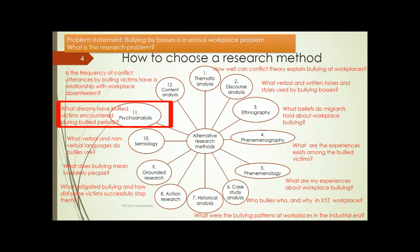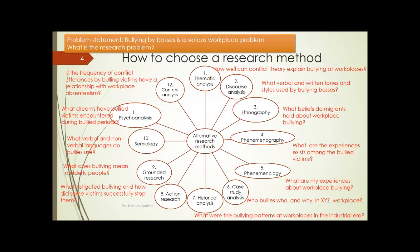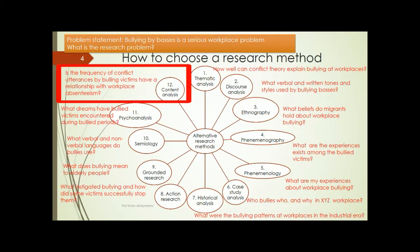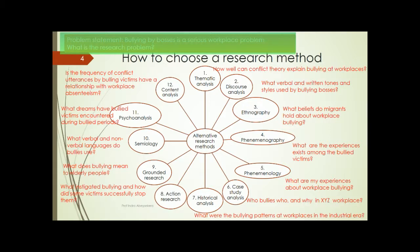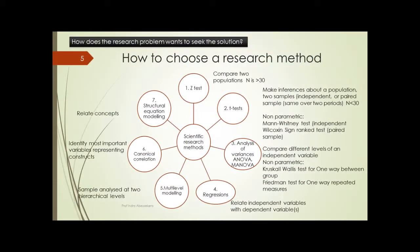Eleventh, psychoanalysis: what dreams have bullied victims encountered during bullied periods? Twelfth, content analysis: does the frequency of conflict utterances by bullied victims have a relationship with workplace mental illness? This is a question we can ask and use content analysis to answer. So, to define a research problem, we can come up with various research questions, and depending on the research question, we must match it with the appropriate research method. These are examples of alternative research methods.